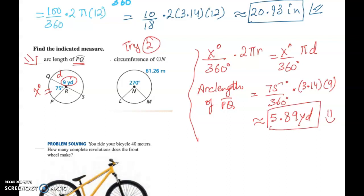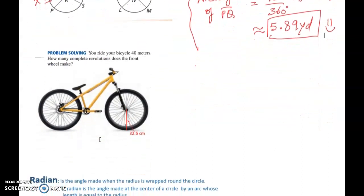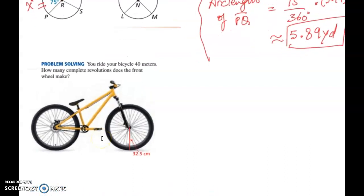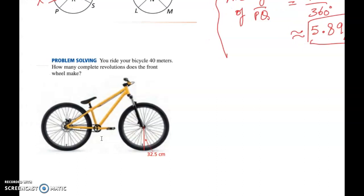Try question number two on your own, and let me solve one word problem for you. It says: you ride your bicycle 40 meters — how many complete revolutions does the front wheel make? They are asking for only the front wheel and how many revolutions it is taking. In this bicycle, they have given you the radius as 32.5. So radius is 32.5. When they are talking about the revolution, that means they are talking about circumference — that is my keyword.